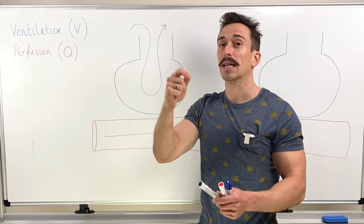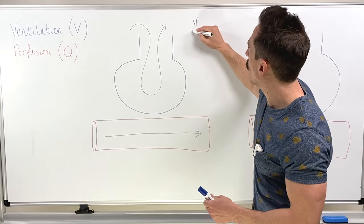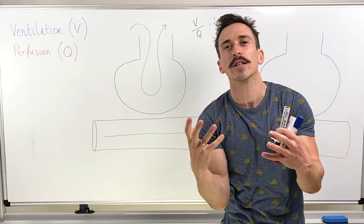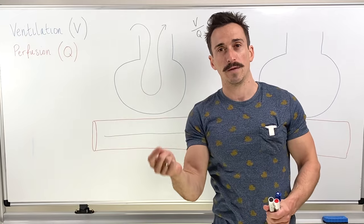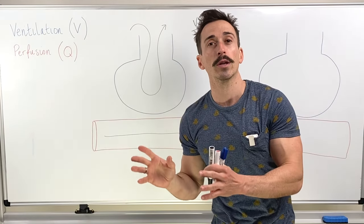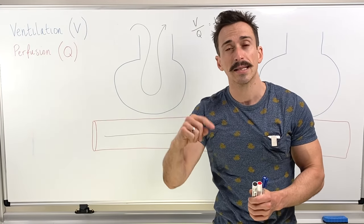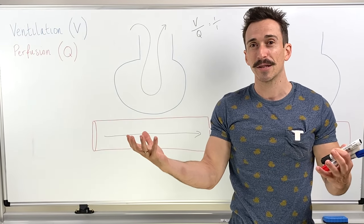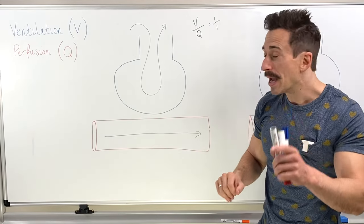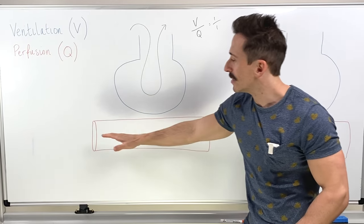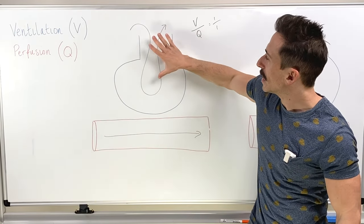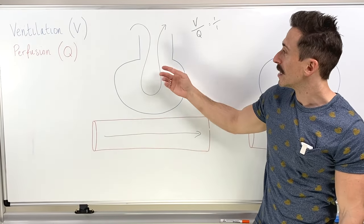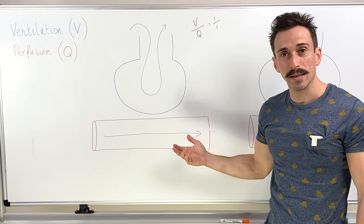It's called ventilation-perfusion coupling, matching, or ratio because we want that VQ ratio to be as close to one-to-one as possible. Here's the analogy I like to use: imagine you have a football game that's just finished, with a hundred thousand people leaving the stadium who all want to go home. You need the right amount of buses — not too few and not too many. The people are the gas going into the alveolus and the buses are the blood cells going past. If ventilation drops, you want perfusion to drop; if ventilation increases, you bring more buses. If V goes up, Q goes up; if V goes down, Q goes down.